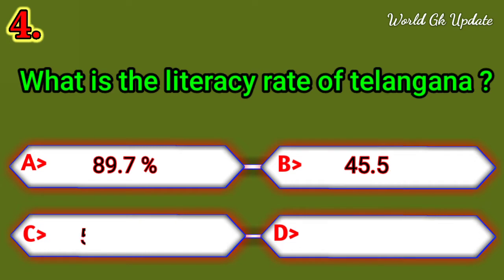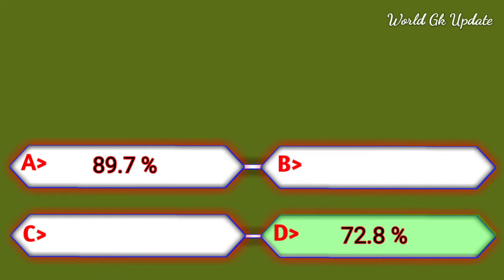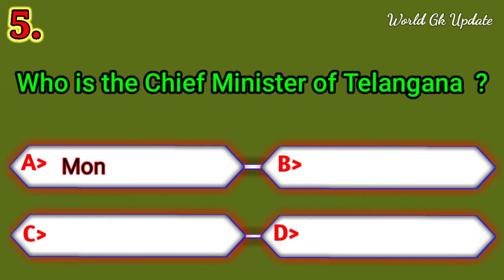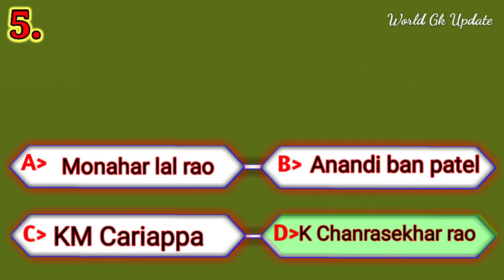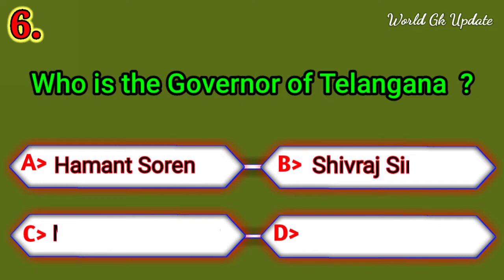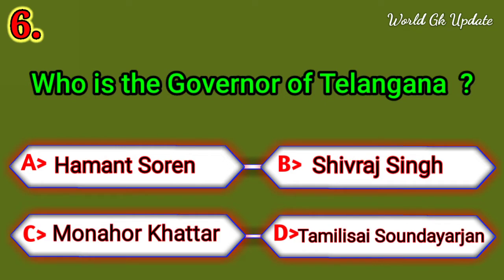What is the literacy rate of Telangana? The right answer is 72.8%. Who is the Chief Minister of Telangana? The right answer is K. Chandra Shekhar Rao. Who is the Governor of Telangana? The right answer is Tamilisai Soundararajan.